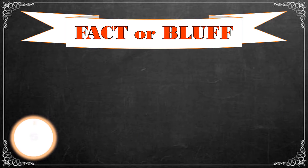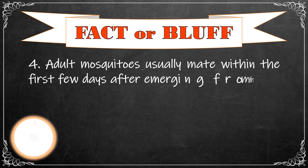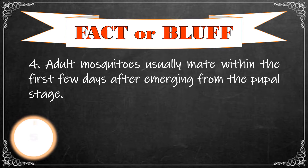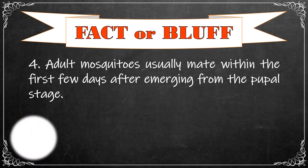Number 4: Adult mosquitoes usually mate within the first few days after emerging from the pupal stage. The correct answer is fact!